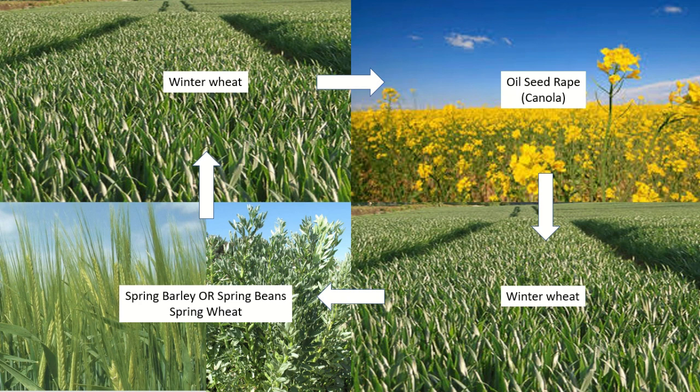We're an all-arable farm. We do invite animals in to help eat our crop residues, but generally our crop choice is related to a combination of profitability and attention to plant families in order to mitigate disease and pathogens. Wheat is our most profitable crop, so we start our rotation with wheat.